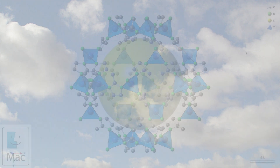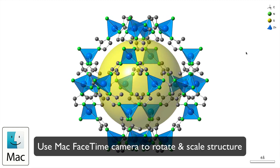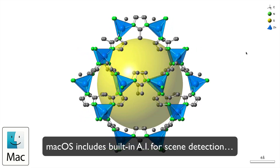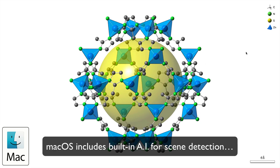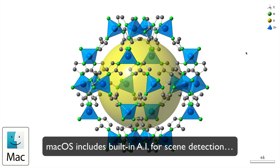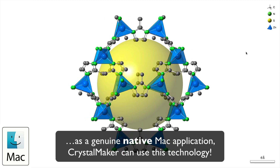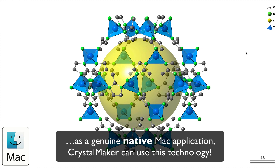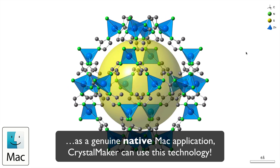In this tutorial, I'm going to demonstrate how you can use your Mac's FaceTime camera to rotate and scale your structure. macOS includes advanced artificial intelligence which can automatically scan a scene, such as a video frame, and detect objects such as faces, hands, and fingers. As a genuine native Mac application, CrystalMaker has access to all this, and we've programmed our application to interpret finger positions and provide a virtual trackball for manipulating your structure.